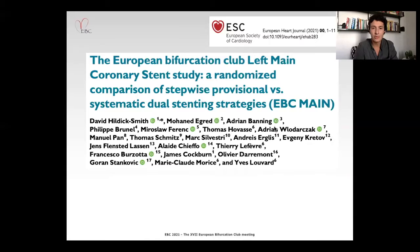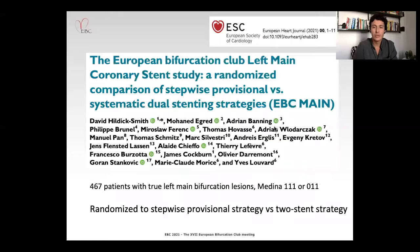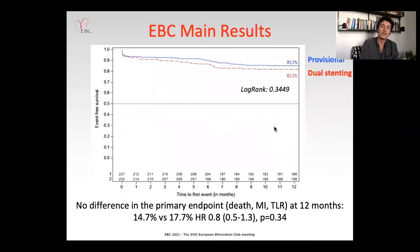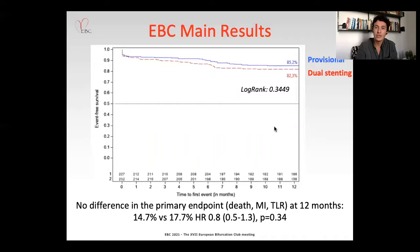The EBC main was a randomized trial, recently published in the European Heart Journal in 2021, which randomized 467 patients with true left main bifurcation lesions — Medina 1,1,1 or 0,1,1 — to a stepwise provisional strategy versus a two-stent strategy upfront. We all know the result of this very important trial: no difference in the primary endpoint, which was a composite of death, MI, or target lesion revascularization, was found at 12 months. Side branch stenting was performed in only one-fifth of patients — actually 22% — in the provisional group.